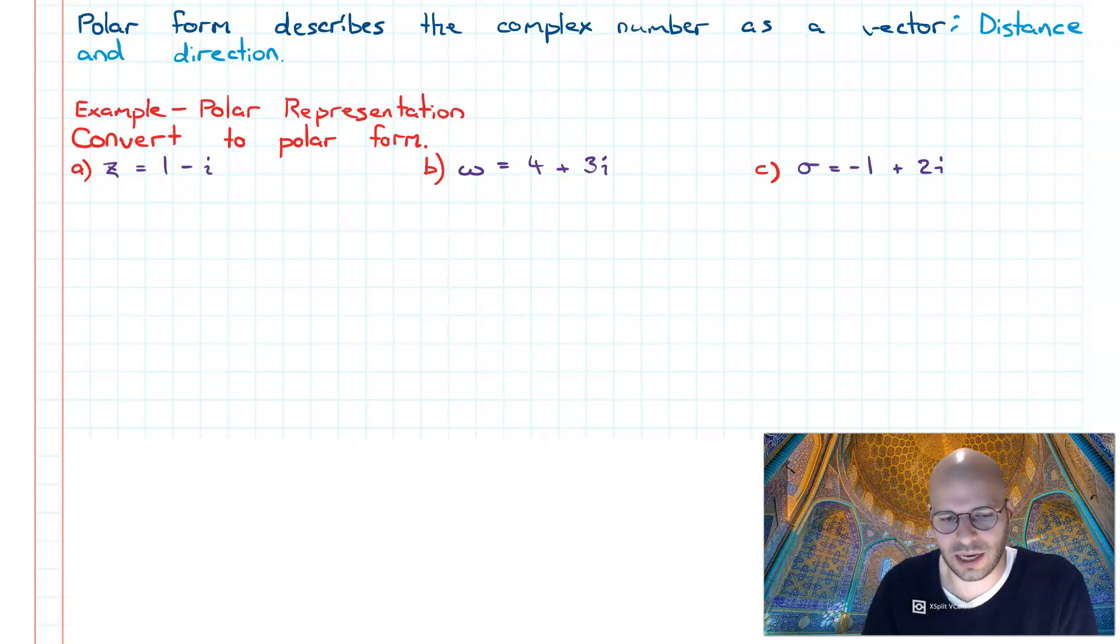The first step is we have z equals 1 minus i. We first want to calculate the modulus of z: one squared plus the square of negative one, and that's going to give us a result of root two.